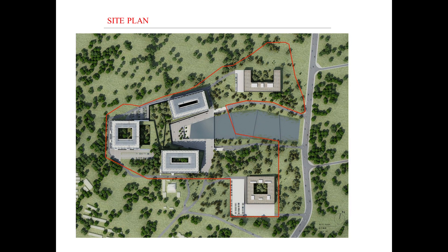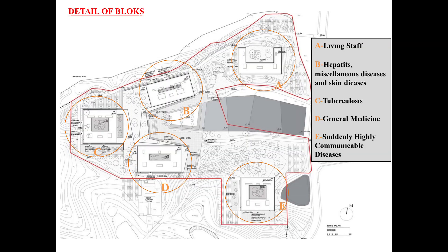This is the site plan. It shows detailed blocks labeled A, B, C, D, and E. Block A is Living Staff, block B is Hepatitis, miscellaneous diseases and skin diseases, block C is Tuberculosis, block D is General Medicine, and block E is Suddenly Highly Communicable Diseases.